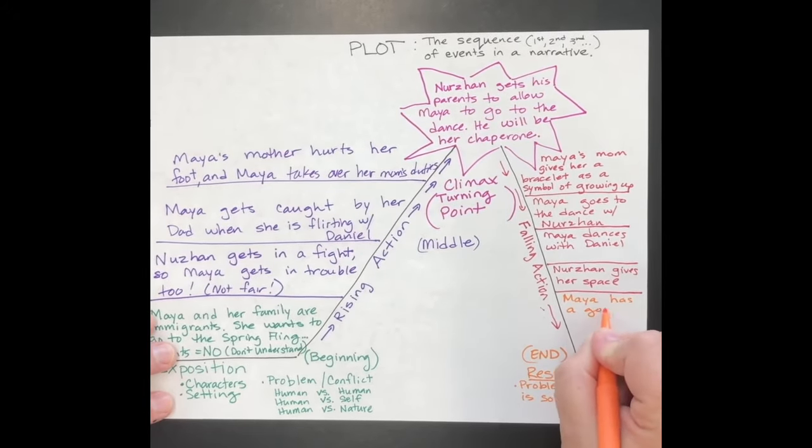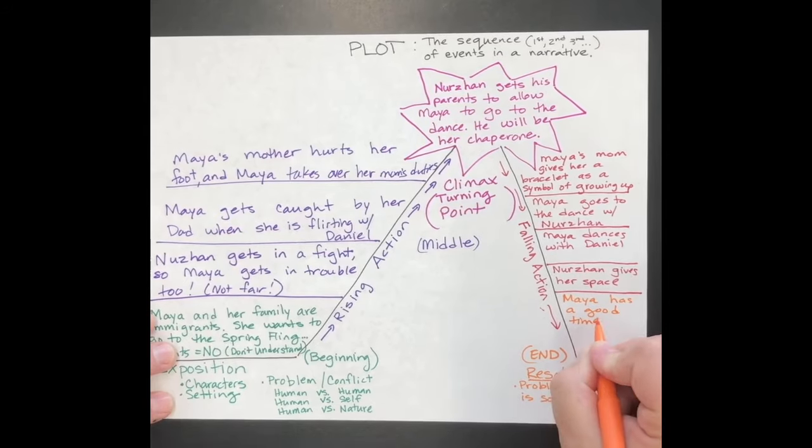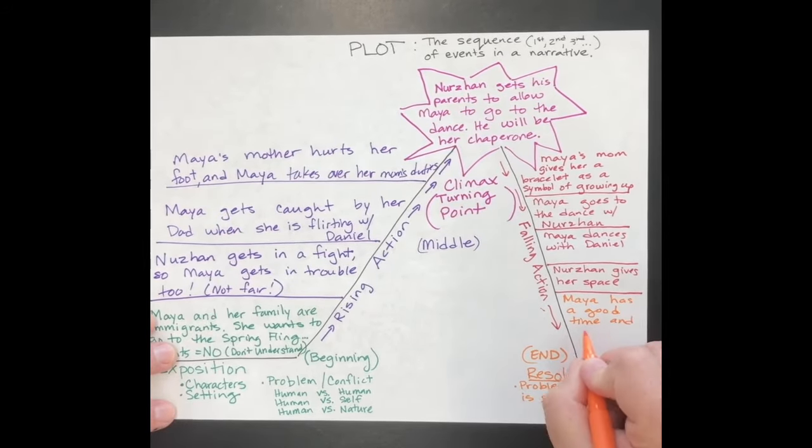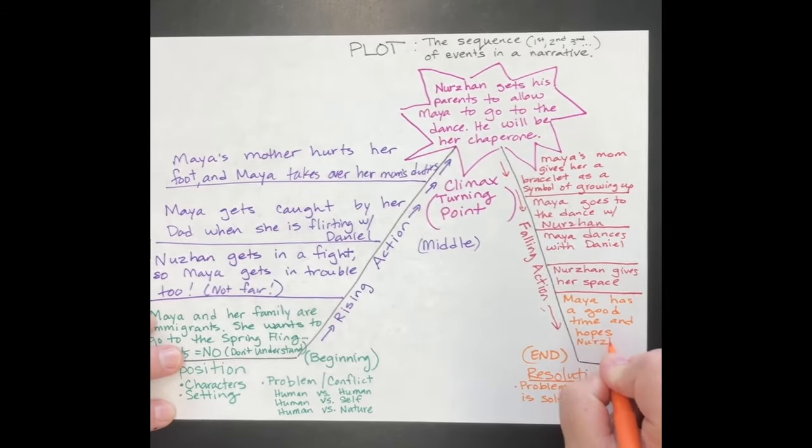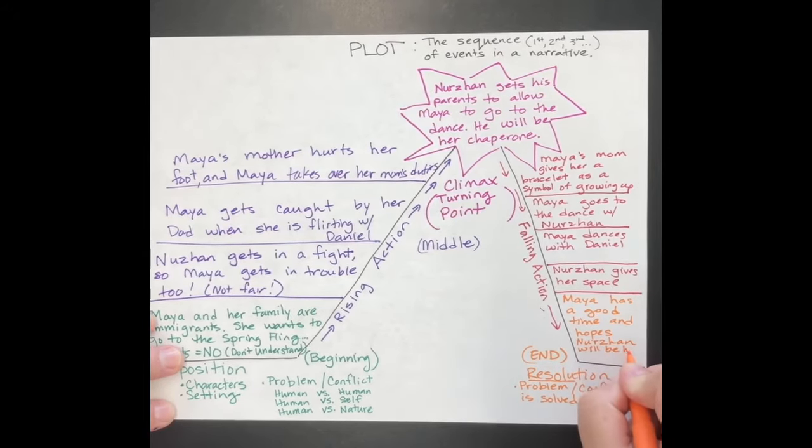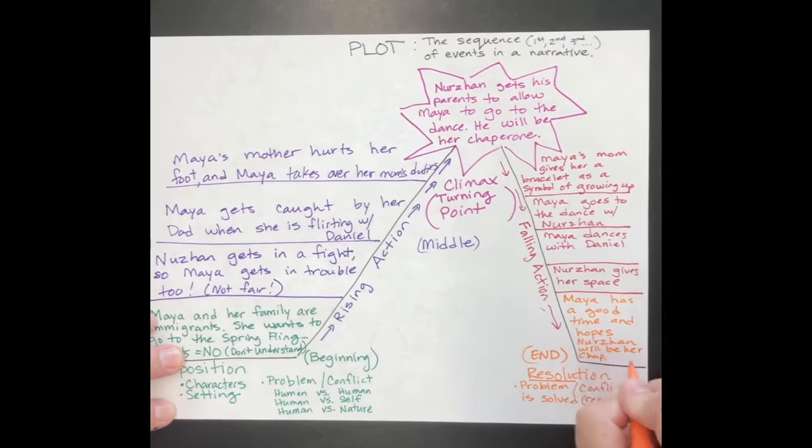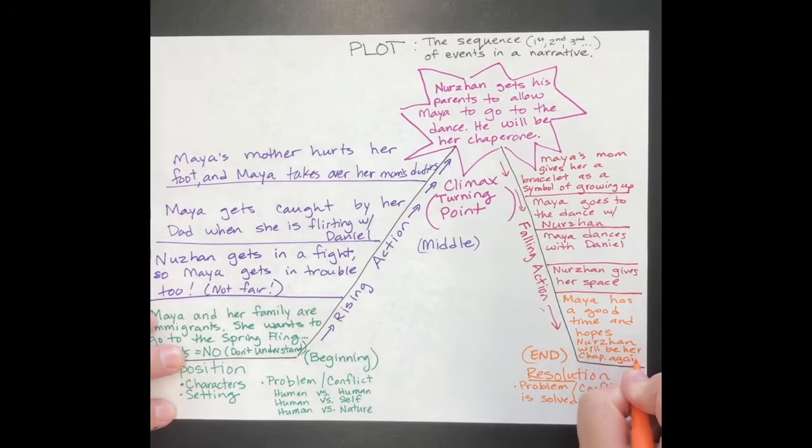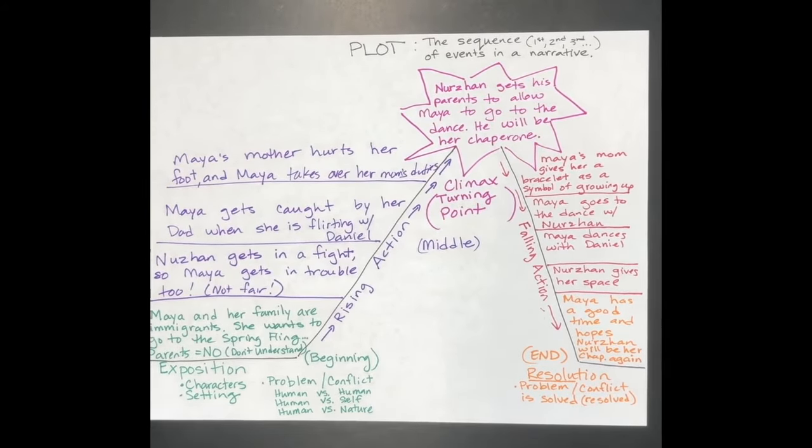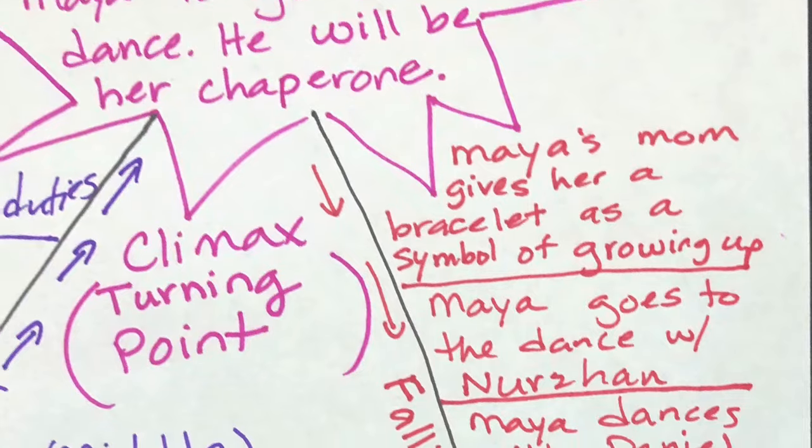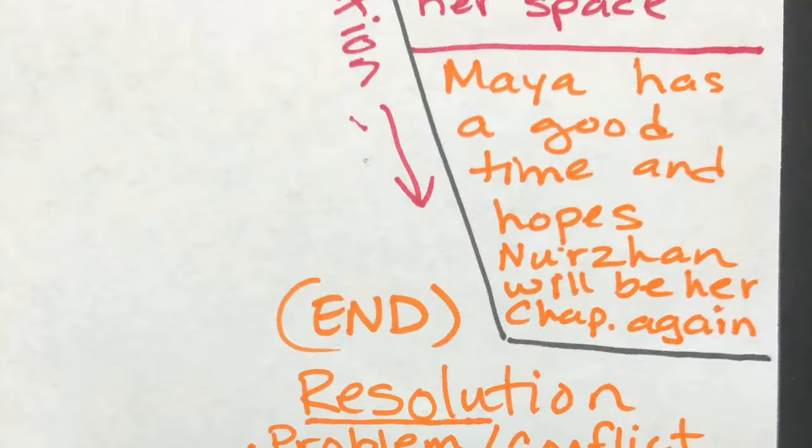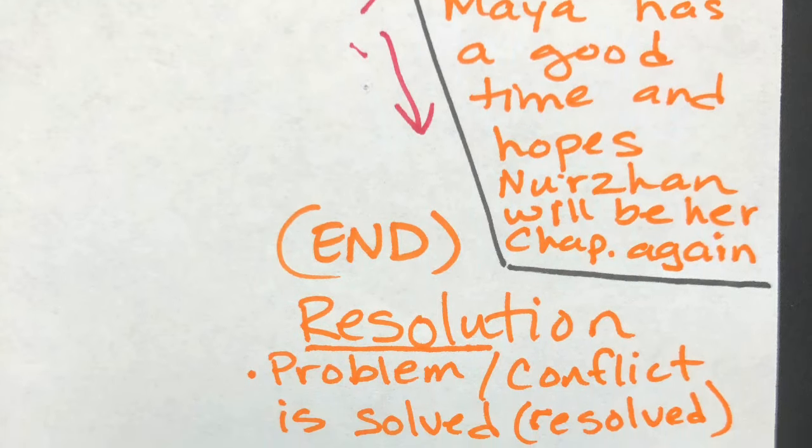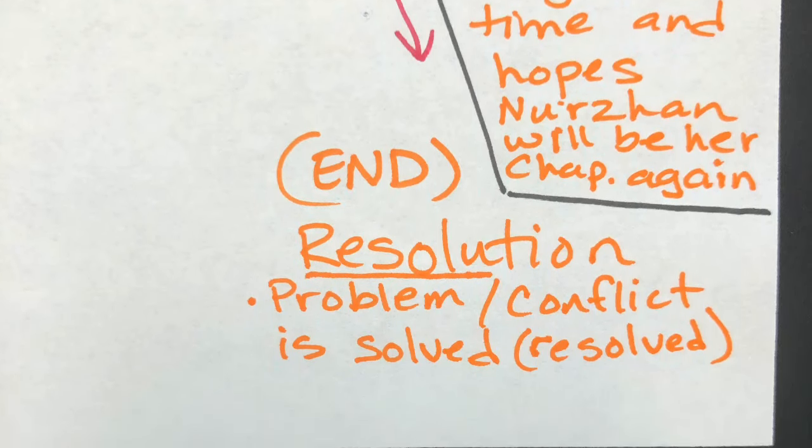At the end of a narrative, there's often this look back. We want to think about what the characters learn from the story and how they're looking forward to the future. When you're writing your narratives, these are things to think about at the end. Maya's thinking back at what a good time she had, and she's really hoping that Nershon will be her chaperone again. This is how the narrative, the falling action, everything wraps up, ties it up, and there's a look to the future. The problem is resolved.